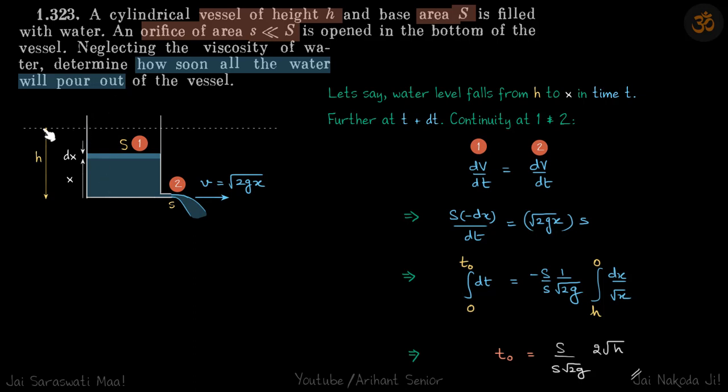Let's say at somewhere between h and 0, when the water column's height is x, it falls by an amount dx. Whatever liquid is lost here would have gone out from the orifice in the moment dt. We're going to equate the volume flow rate at these two moments.